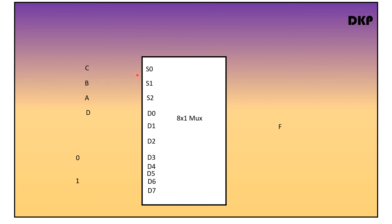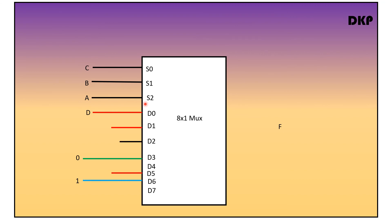Give inputs C, D, B, A to the select lines. D is connected to D0, D1, and D5. D bar is given as the input to D2. 0 is given as the input to D3 and D4, and 1 is given as the input to D6 and D7. So this is the logic diagram. Thanks for your time.